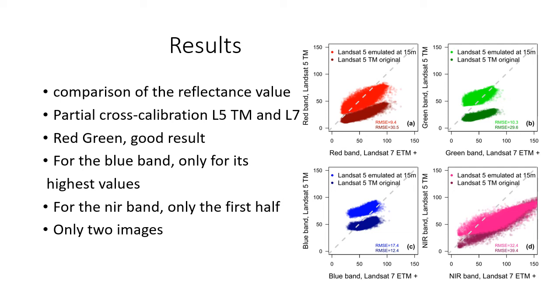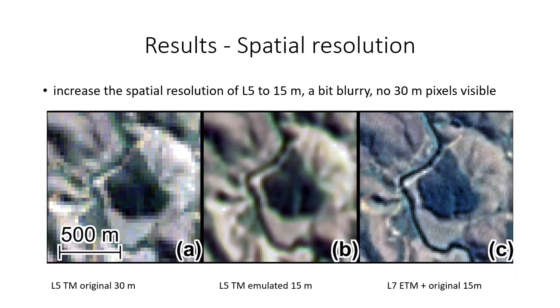For the blue and the near bands, we recover only partially the L7 reflectance values. However, the model was trained with only two Landsat tiles, so it could likely improve with more data.